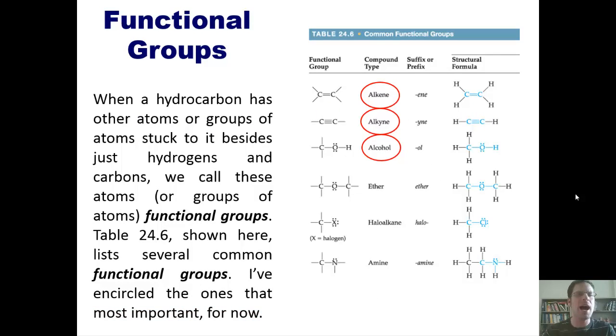When a hydrocarbon has other atoms or groups of atoms stuck to it besides just hydrogens and carbons, we call these atoms or groups of other atoms functional groups. Table 24.6, which is shown right here, lists several common functional groups. I've encircled the ones that are most important for now. Let's take a look at those.